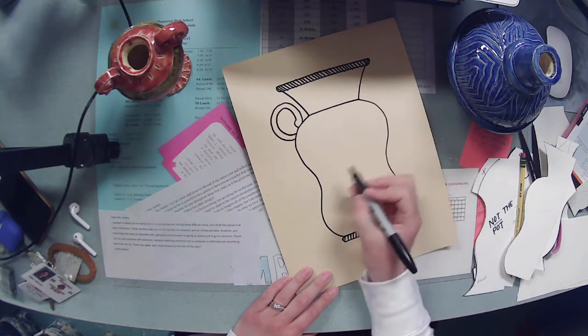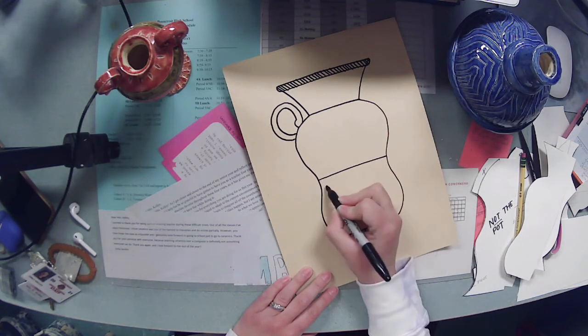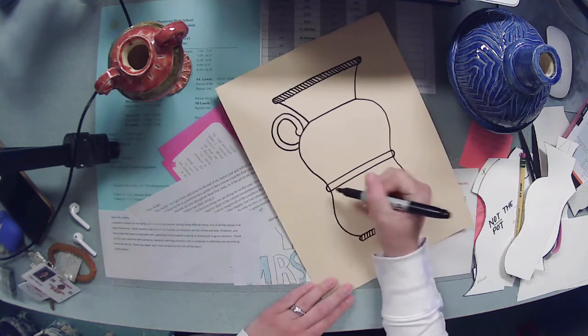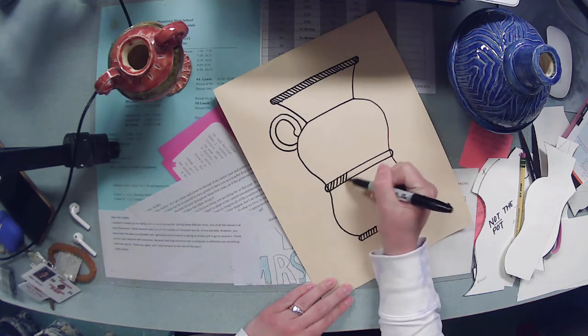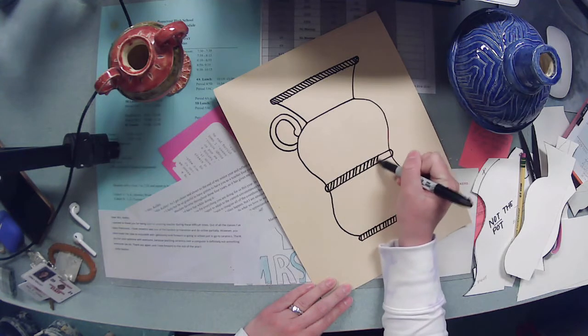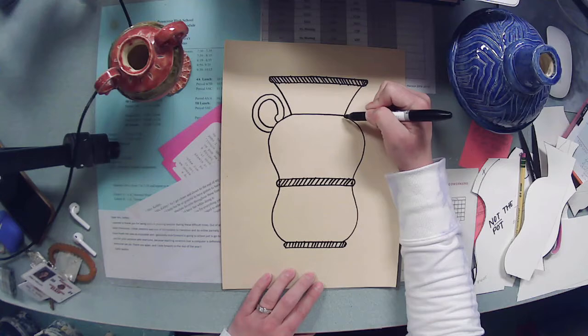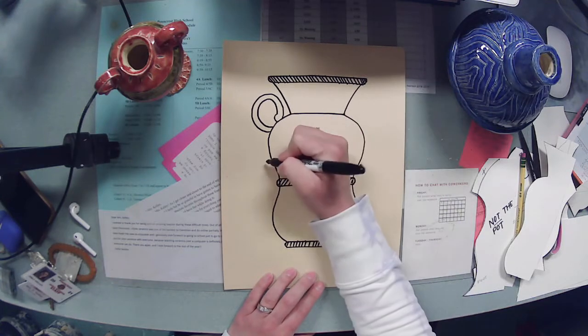So it might be nice if you have an area of the pot in mind that you want to do that fancy glazing that you kind of create a barrier for that. Maybe I leave a coil unblended here so I get kind of a border and then I can stop here and have a nice corner.